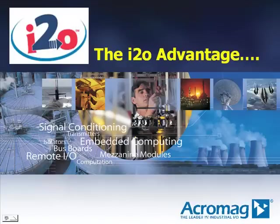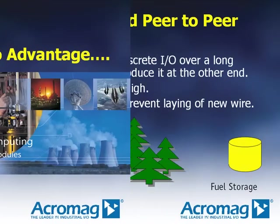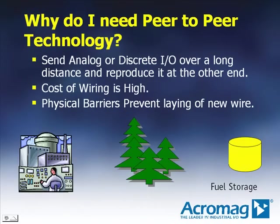Welcome to Acromag's I2O Advantage presentation. Why do you need peer-to-peer technology? Very simply, running analog and discrete wires over a long distance can be cost prohibitive. The cost and labor of wiring may be very high — in some cases in excess of $40 per foot. In other cases, there may be physical barriers preventing the laying of new wire, such as trees, bodies of water, buildings, or factory plants. In those cases, a good peer-to-peer wireless technology is needed.